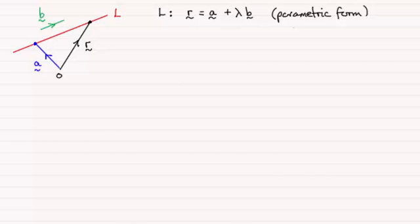It uses the vector product or cross product. Already you should be familiar with the parametric form for the equation of a line, let's say L. It's given by R equals A plus lambda B, where R is the position vector of any point on the line L.